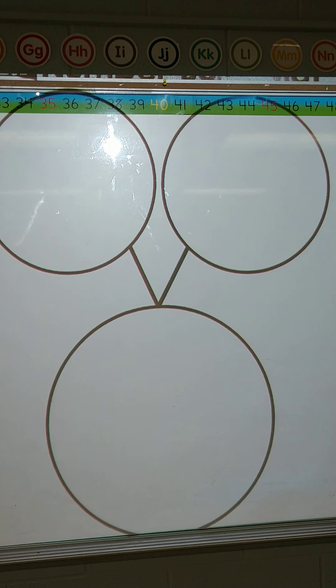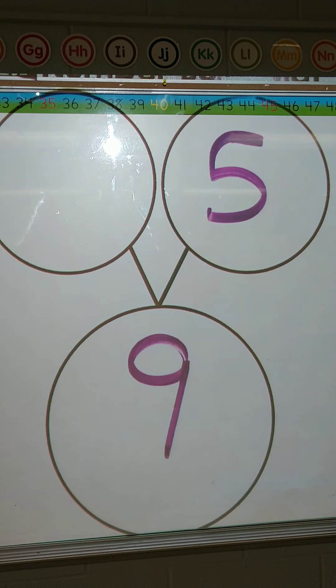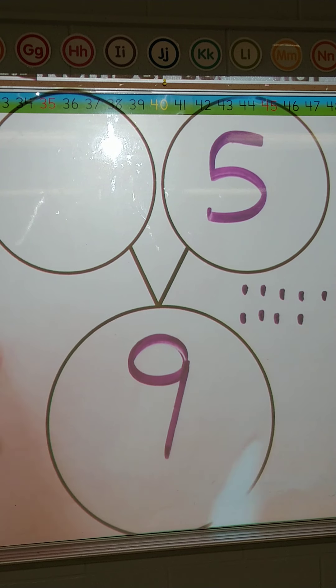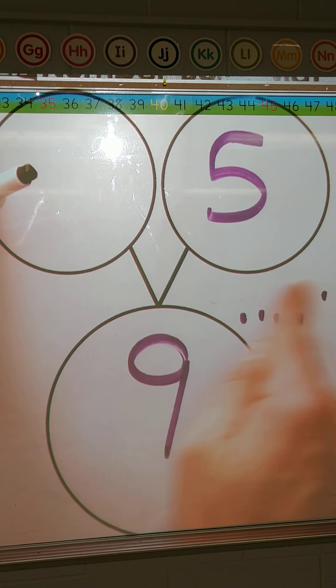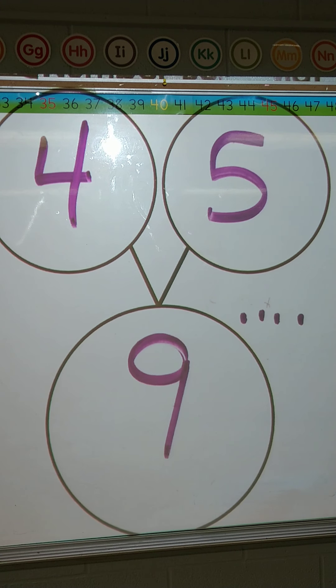Let's do one more real quick. Let's go with 9 and 5. It doesn't matter which circle has the part as long as we have both parts. 1, 2, 3, 4, 5, 6, 7, 8, 9. 9 and 5. So we have 9 and 5. 9 is the whole and we have 1 part is 5. So if we take away 5, 1, 2, 3, 4, 5, we have 4 left. So 4 and 5 make 9 together.